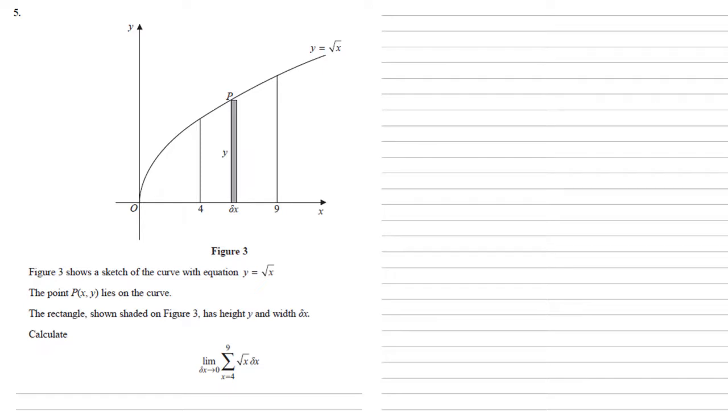Figure 3 shows a sketch of the curve with equation y equals root x. The point P(x,y) lies on the curve, and the rectangle shown in Figure 3 has height y and width delta x.